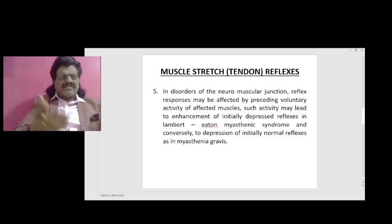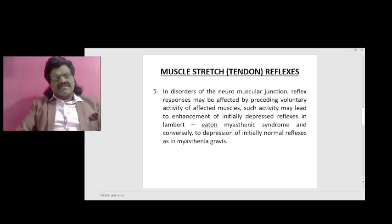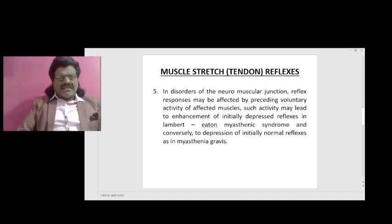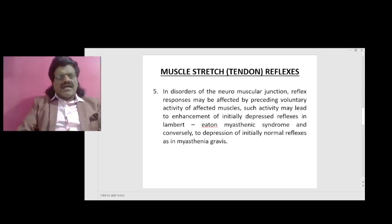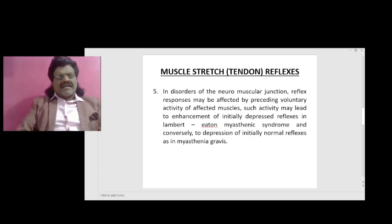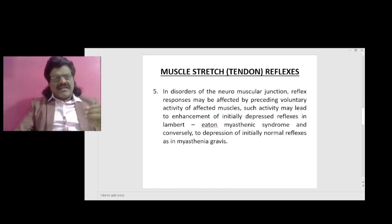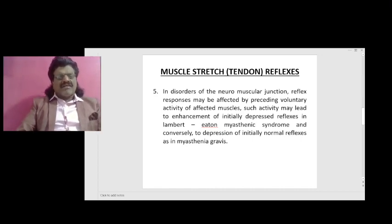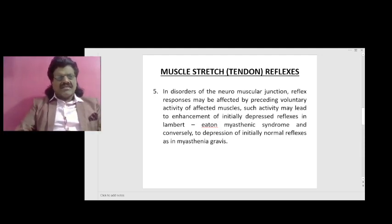Another clinical manifestation we can elicit in myasthenia gravis is easy fatigability. With repeated activity there is fatigability of muscles. For example, a person chewing hard meat: initially he'll be able to chew, but with repeated activity he may find it difficult even to bite — very characteristic of myasthenia gravis. So in disorders of the neuromuscular junction, activity may lead to enhancement of initially depressed reflexes in Lambert-Eaton myasthenic syndrome, and conversely to depression of initially normal reflexes in myasthenia gravis.